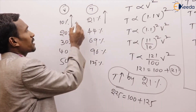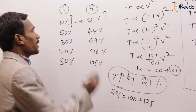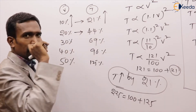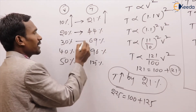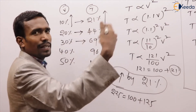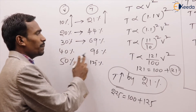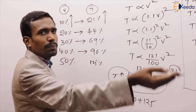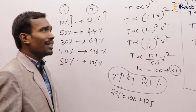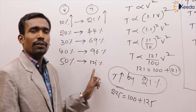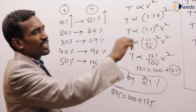Summary: if voltage increased by 10%, torque increased by 21%. By 20%, torque increased by 44%. By 30%, torque increased by 69%. By 40%, torque increased by 96%. By 50%, torque increased by 125%. This is for voltage increases.